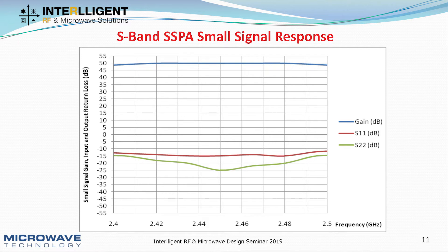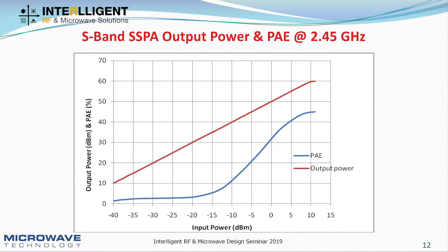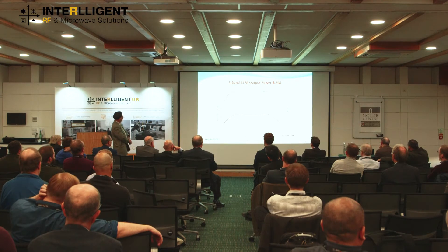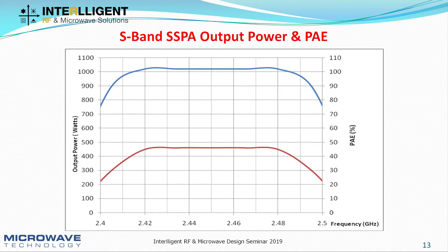In terms of performance, over 2.4 to 2.5 GHz the gain was just around 50 dBs for the whole amplifier, with input and output return loss better than 10 dBs. The measured compression point and power added efficiency at 2.45 GHz — the primary frequency for the industrial heating application — hit just over 60 dBm with a PAE of around 45%, running in CW mode. Over 2.42 to 2.48 GHz it achieved 1050 watts RF with around 45% PAE.